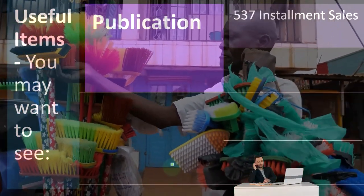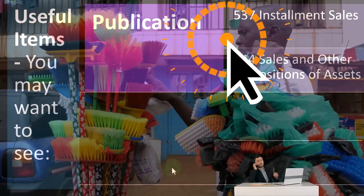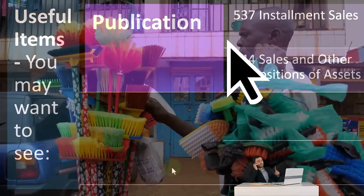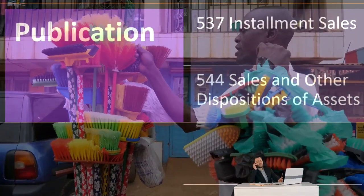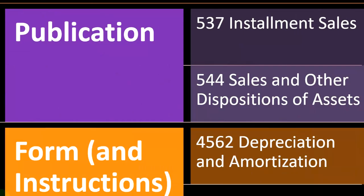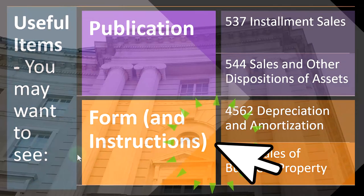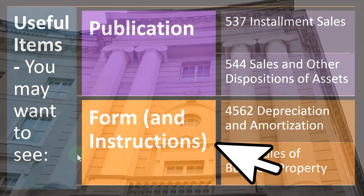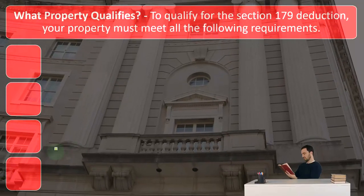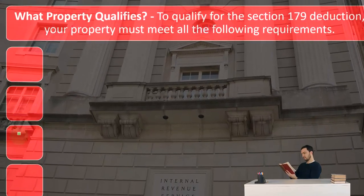There are useful related publications you may want to consult: Publication 537 on installment sales, Publication 544 on sales and other dispositions of assets, the instructions for Form 4562 on depreciation and amortization, and Form 4797 on sales of business property. All of these can be found on the IRS website at irs.gov.